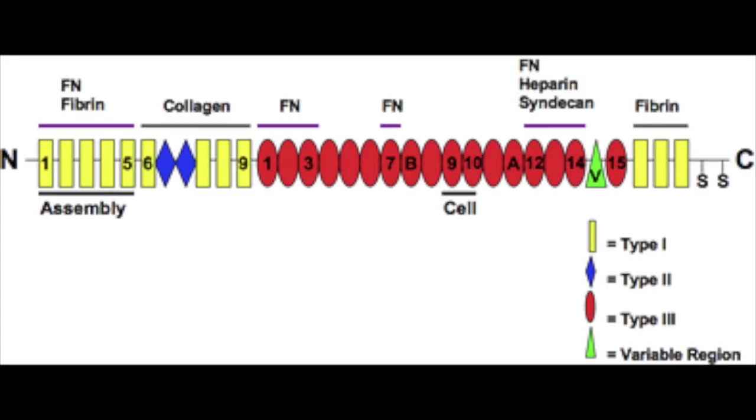Fibronectin structure is rod-like composed of three different types of homologous repeating modules: types one, two, and three. These modules, though all part the same amino acid chain, can be envisioned as beads on a string, each one attached to its own neighbors by short linkers.